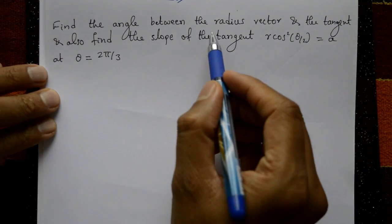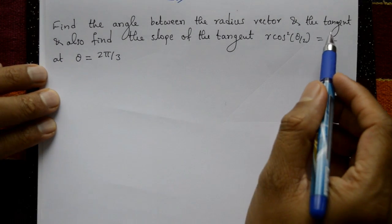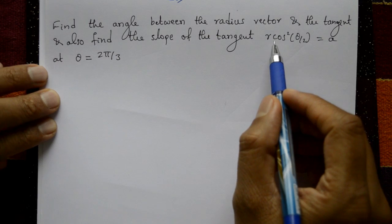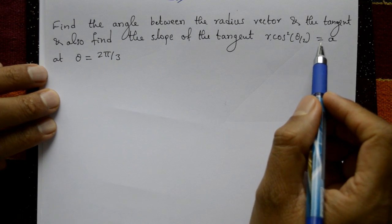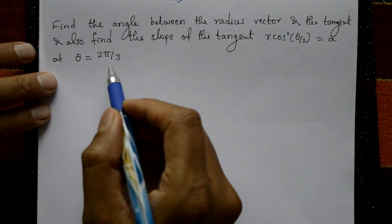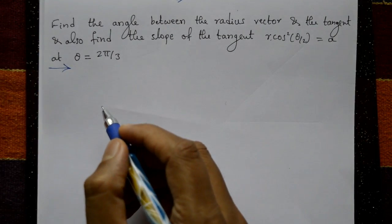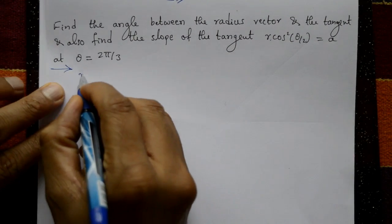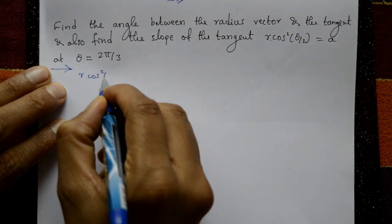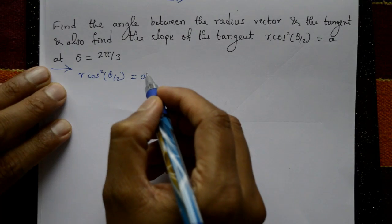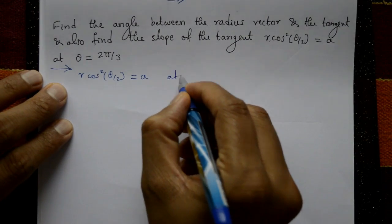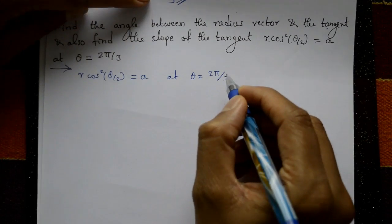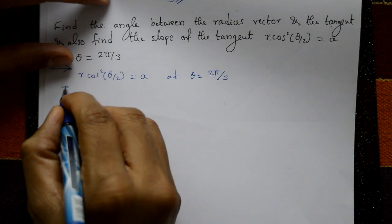Find the angle between the radius vector and tangent, and also find the slope of the tangent. The curve is given as r·cos²(θ/2) = a, at θ = 2π/3. Solution: the given curve is r·cos²(θ/2) = a at θ = 2π/3. Taking log on both sides.